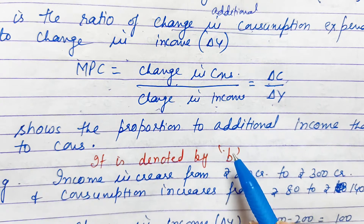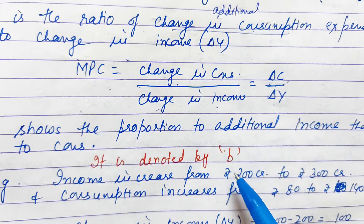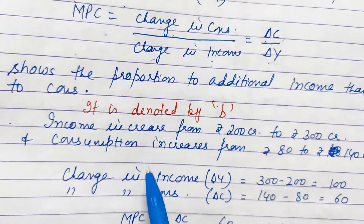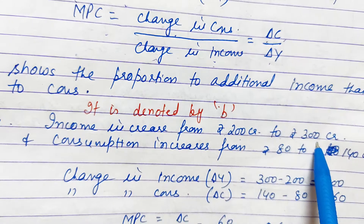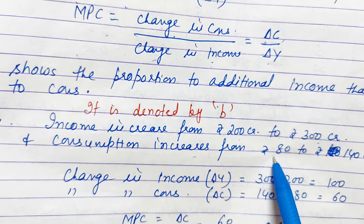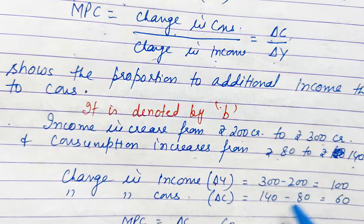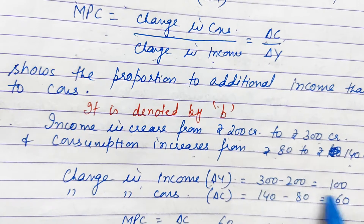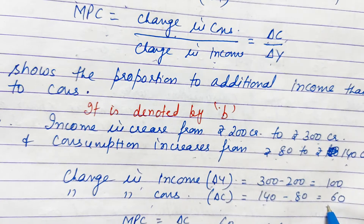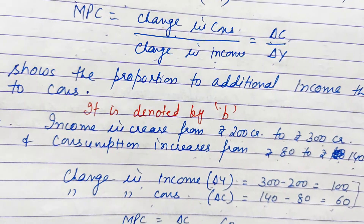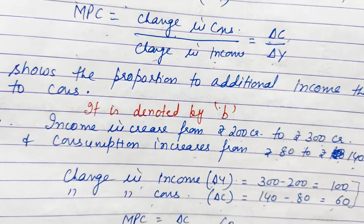MPC is denoted by B in further chapters, but in NCERT it is done with small c. For example: income increased from 200 crore to 300 crore, and consumption increased from 80 crore to 140 crore. So change in income delta Y = 300 minus 200 = 100. Change in consumption delta C = 140 minus 80 = 60 crore. Now taking the ratio: MPC = change in consumption upon change in income = 60 upon 100 = 0.6.